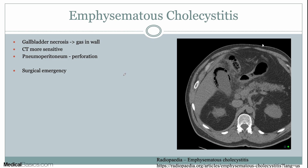The next complication is emphysematous cholecystitis — you have necrosis of the gallbladder wall forming gas within the wall. CT is more sensitive than ultrasound here, which is why it's shown. All of these foci within the gallbladder wall are gas, having the same density as gas outside the patient or within the stomach. This is a surgical emergency and needs to be treated very emergently. If you see pneumoperitoneum — gas within the peritoneum — in the setting of emphysematous cholecystitis, that indicates perforation.